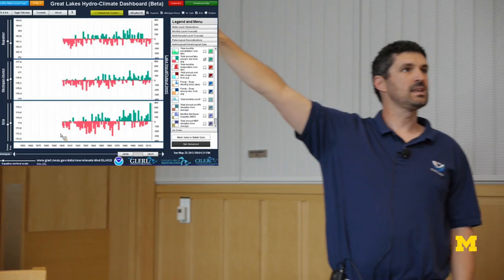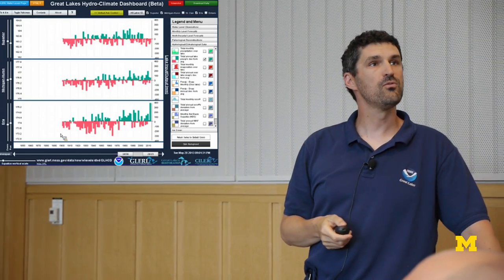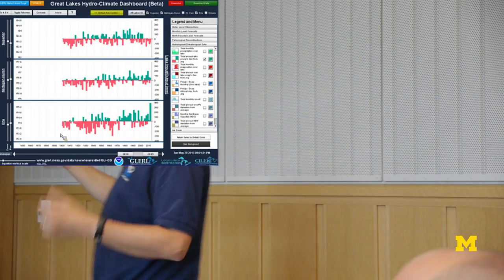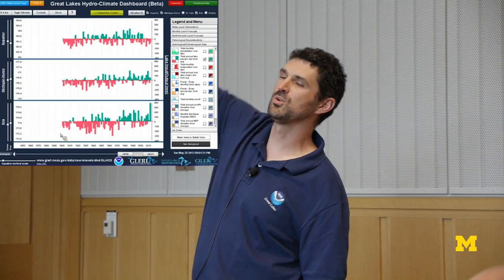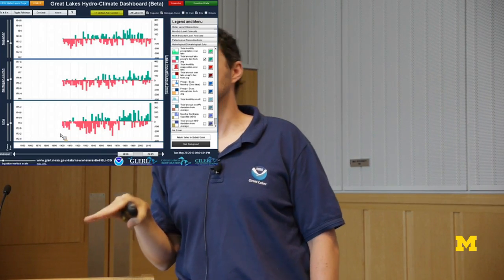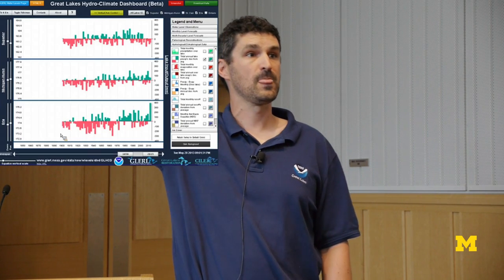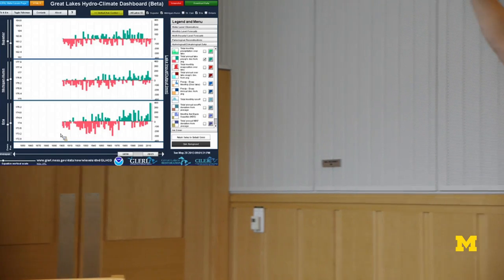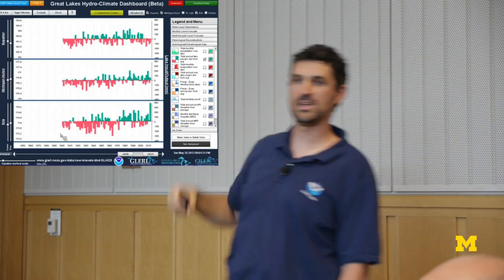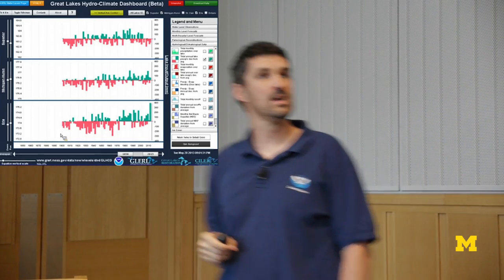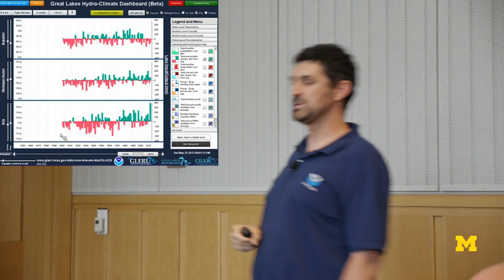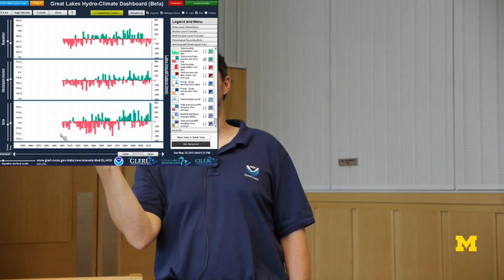Looking at annual precipitation values over each lake — Superior, Michigan-Huron, and Erie — going back to about 1900, the reddish vertical bars represent annual totals below the long-term average, while the green bars represent amounts above the long-term average. For Lake Superior, precipitation has gone up and down, but since the 1980s has tended to go towards below-average values. Interestingly, for Michigan-Huron and Erie, based on the increased occurrence of green bars, precipitation amounts have actually tended to be above their long-term average over the past 23 years.